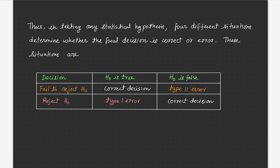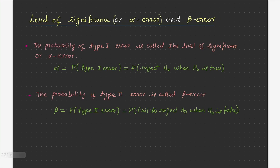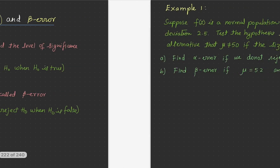Thus, in testing any statistical hypothesis, four different situations determine whether the final decision is correct or an error. These situations are summarized in the form of a table. If we fail to reject H0 and H0 is true, that is a correct decision; if H0 is false, that leads to a Type 2 error. If we reject H0 and H0 is true, that is a Type 1 error; if H0 is false, that is a correct decision. Alpha is the probability of Type 1 error and beta is the probability of Type 2 error.